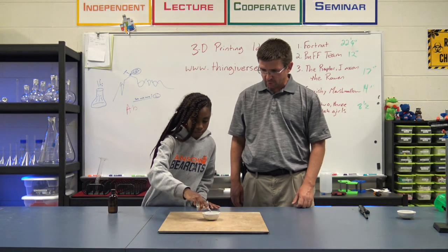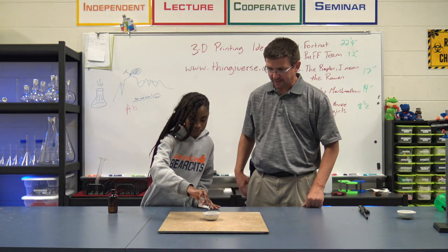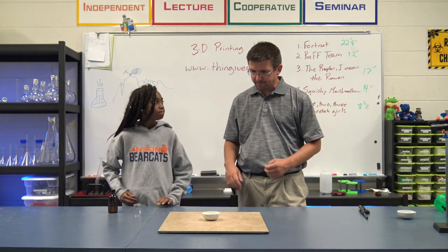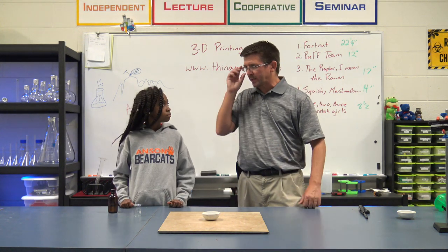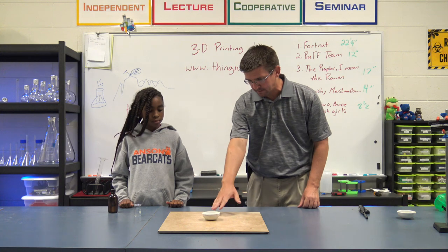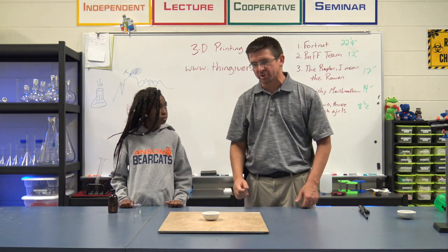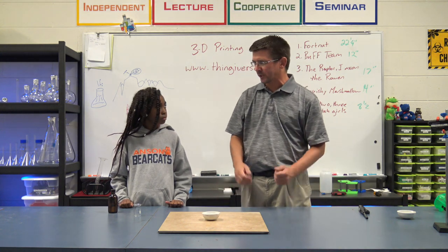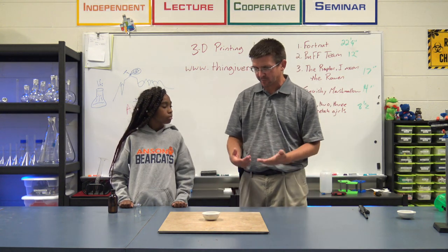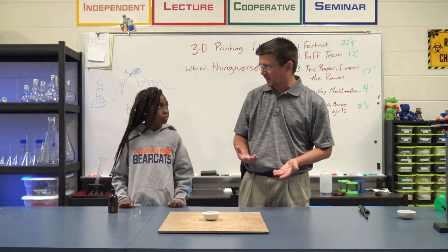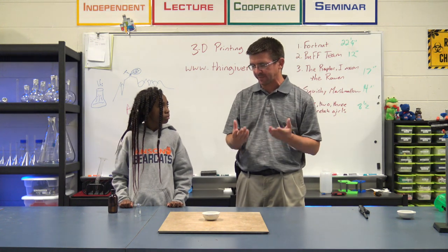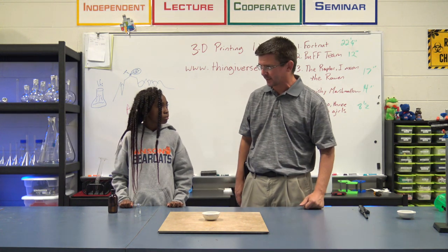We know alcohol is a flammable liquid, right Abby? But when we burn a flammable liquid like alcohol, the liquid in the evaporating dish doesn't all burn at once. What's actually burning is the gas. And we've talked about that in class — how as it evaporates, it releases that flammable gas into the air.